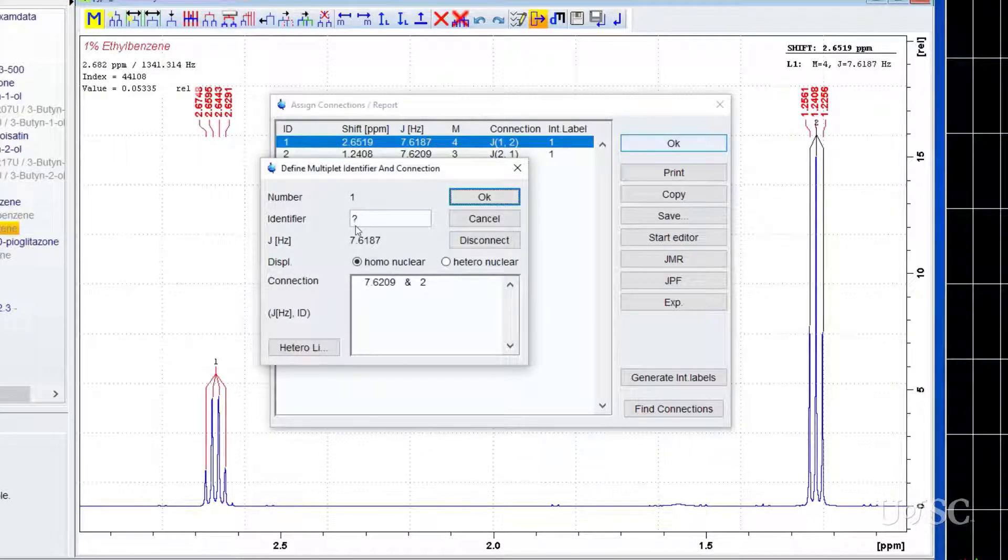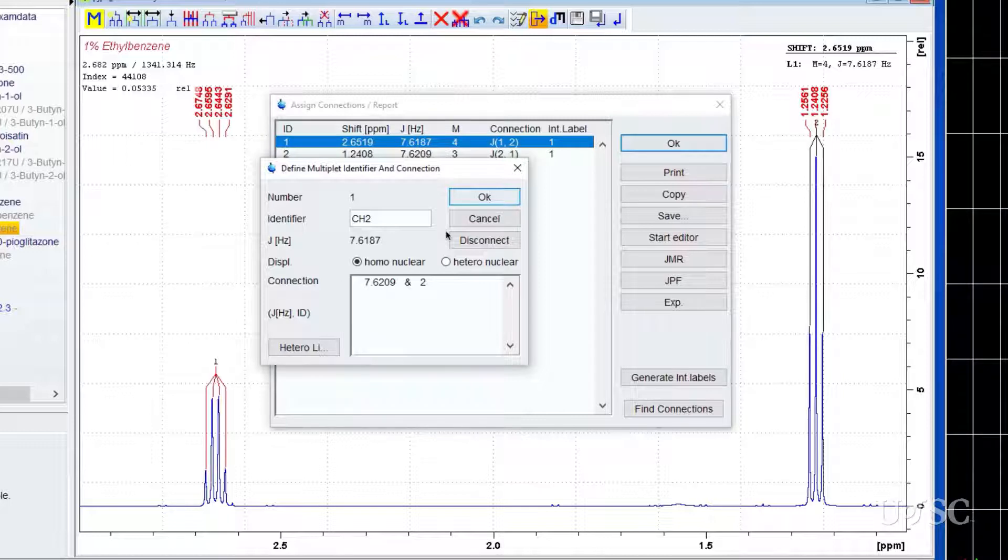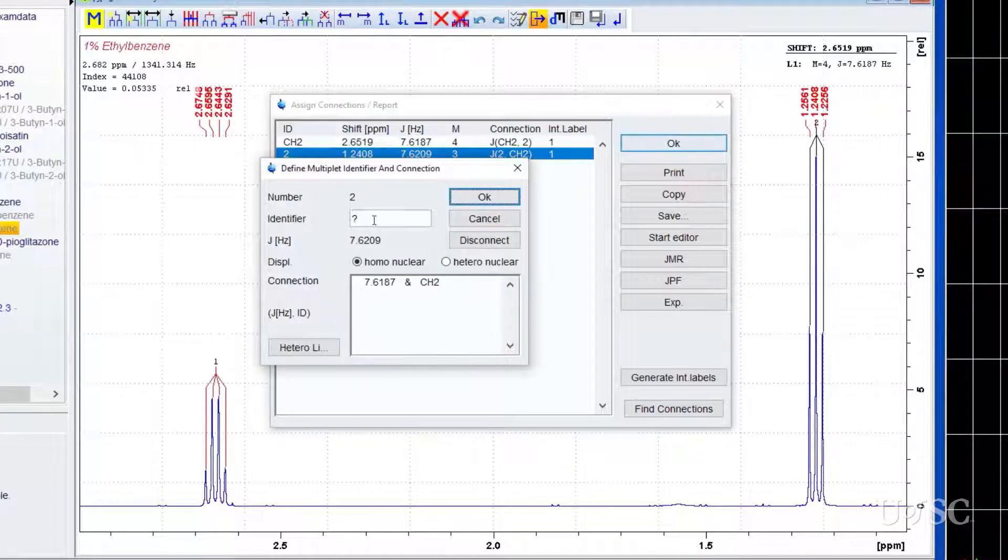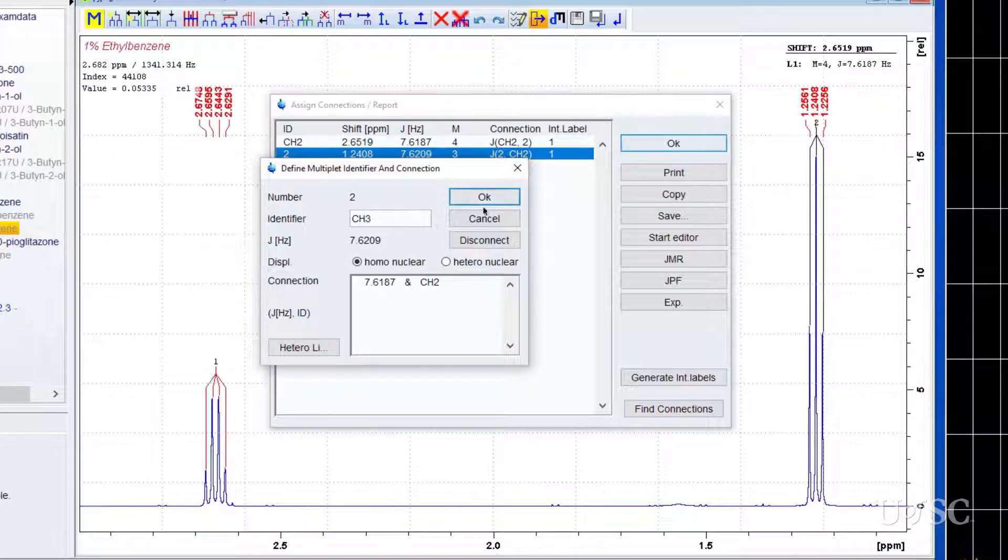Double clicking on one of the lines in the table will open up a dialog box where you can give the resonance an identifier name. This is an optional step. Here I am going to identify this multiplet as the methylene. You could also define the connections in the bottom section of this dialog box. In this case, there is only one other multiplet and the software has correctly made the connection. The methyl can also have its label entered. Now the main results table will use these identities in the ID column and in the connection column.